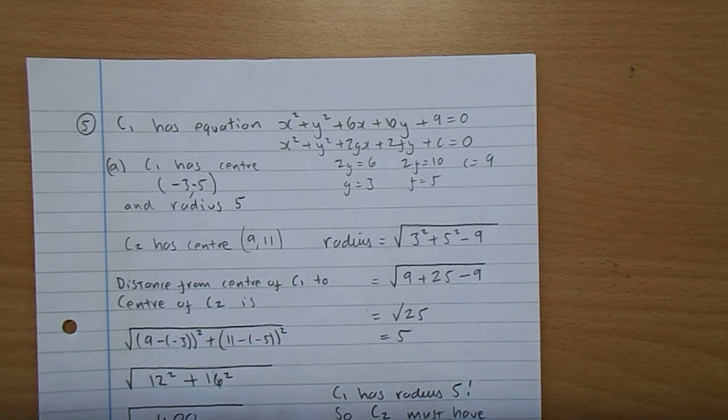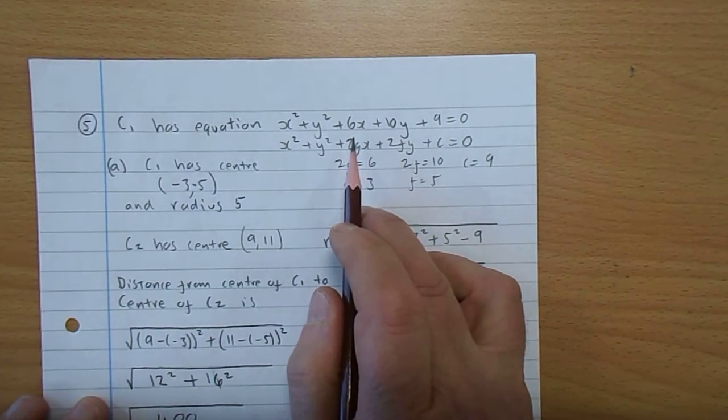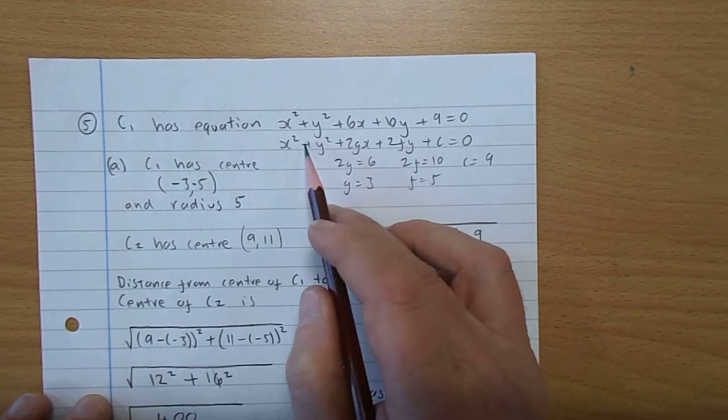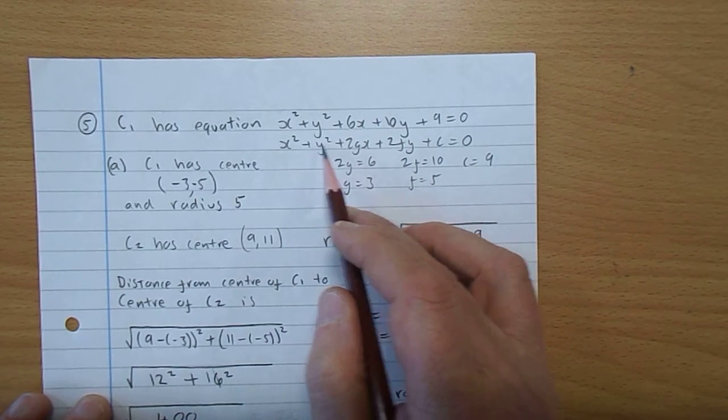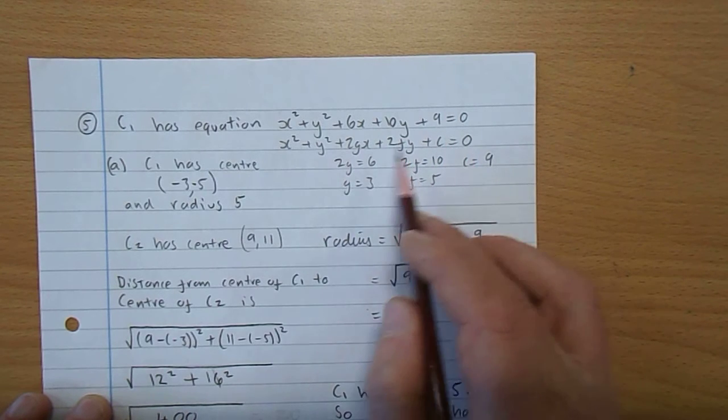First of all, C1 has equation x squared plus y squared plus 6x plus 10y plus 9. We need to get the centre of it. So again, there we have x squared plus y squared plus 2gx plus 2fy plus C equals 0.